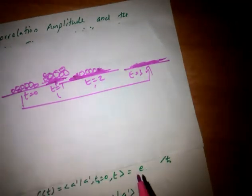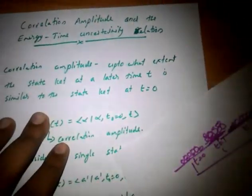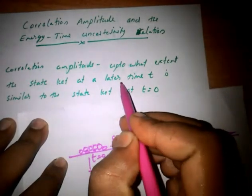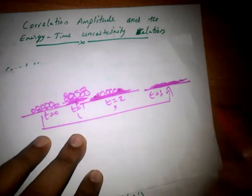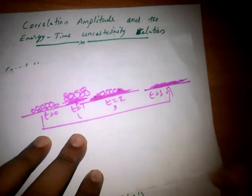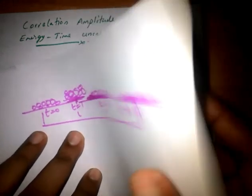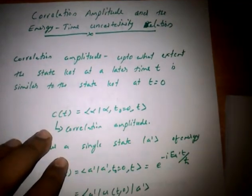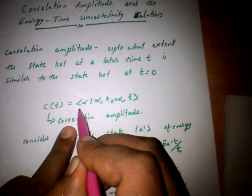The correlation amplitude is analogous to this: it measures up to what extent the state ket at later time t is similar to the state ket at t equal to zero. Just as in the salt figure — in the third state, up to what extent does the salt remain in the form of crystal? This is the question we are asking here.